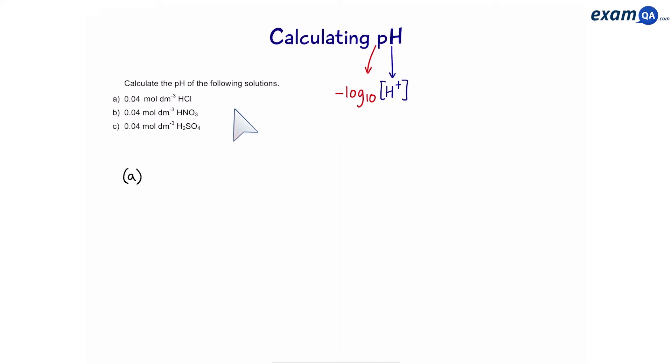Part A. We want to calculate the pH of the following solution. So, the concentration of the acid is 0.04 mole per dm cubed. I'm not going to write mole per dm cubed next to it because the fact that we have square brackets represents concentration. Now,